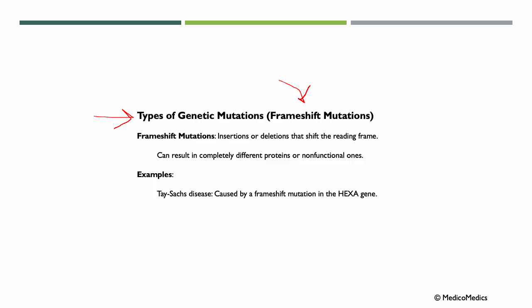Since the genetic code is read in triplets — in codons — this shift changes the entire sequence downstream, often leading to a completely different or non-functional protein. An example is Tay-Sachs disease, caused by a frameshift mutation in the hex gene, leading to a dysfunctional enzyme that results in the accumulation of harmful substances in the brain, causing neurodegeneration. Frameshift mutations overall tend to have more severe consequences than point mutations due to their widespread impact on protein function.